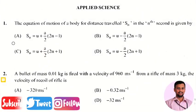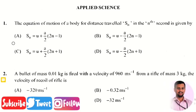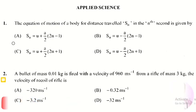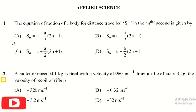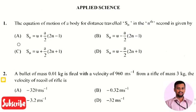In Diploma CET, questions are asked in three different sections: Applied Science, Mathematics, and Mainstream. The questions of Applied Science and Mathematics are common to all branch students, whereas the Mainstream section — Part C — has questions specific to respective branches. In this video, we are going to solve the Applied Science questions.